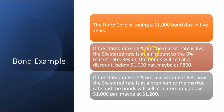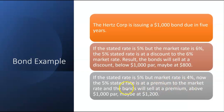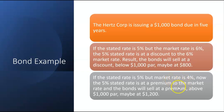So although the stated rate is 5%, the true percentage cost of borrowing is 6%. Now let's change it: if the stated rate is still 5% but the market rate is only 4%, the 5% stated rate is at a premium to the market rate of 4%. The bonds will sell at a premium — above $1,000 par, maybe at $1,200. The bond is paying 5% while the market for similar bonds that day is only 4%, so this bond will sell above par.